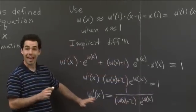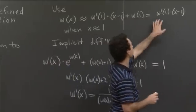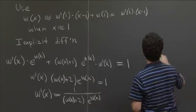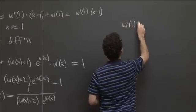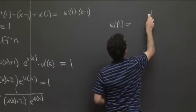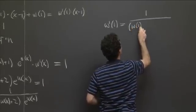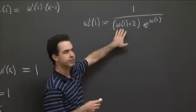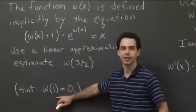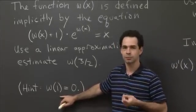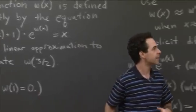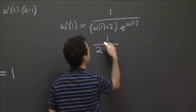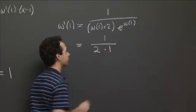This is true for every x, but I just need the particular value w'(1). Putting in x = 1: w'(1) = 1 / [(w(1) + 2) · e^(w(1))]. Since w(1) = 0, this becomes 1 / [(0 + 2) · e^0] = 1 / [2 · 1] = 1/2.